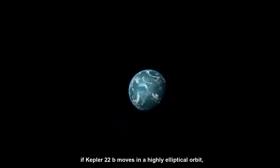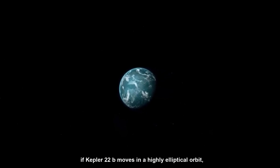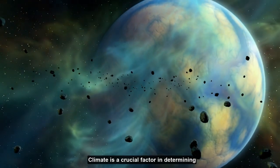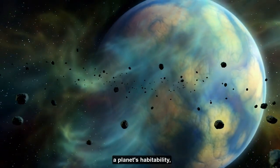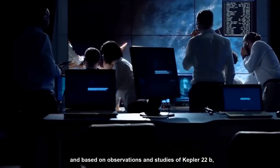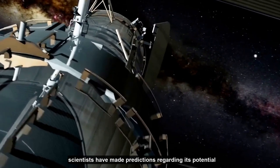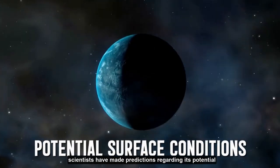However, if Kepler-22b moves in a highly elliptical orbit, the surface temperature variance may be significant. Climate is a crucial factor in determining a planet's habitability. And based on observations and studies of Kepler-22b, scientists have made predictions regarding its potential surface conditions.